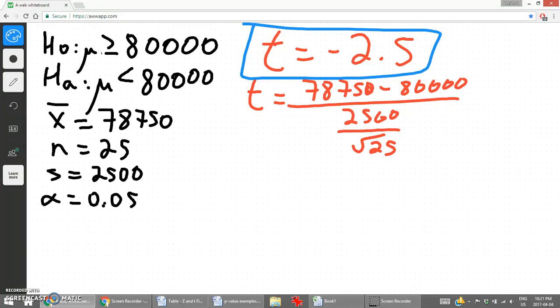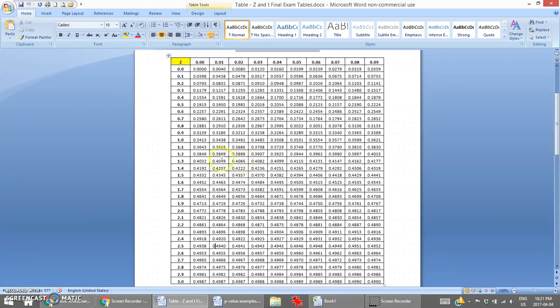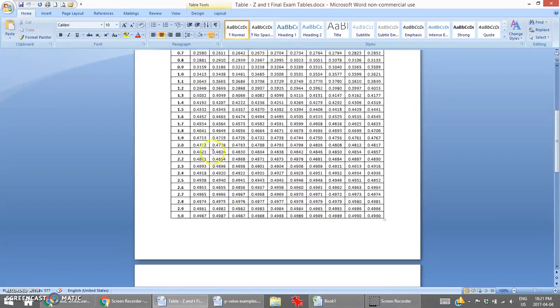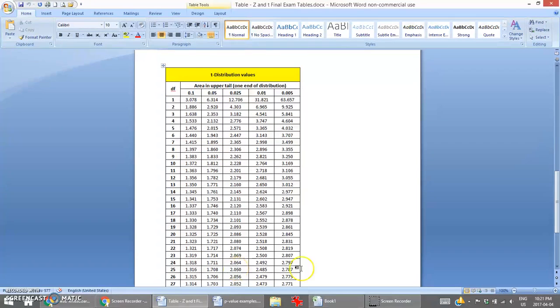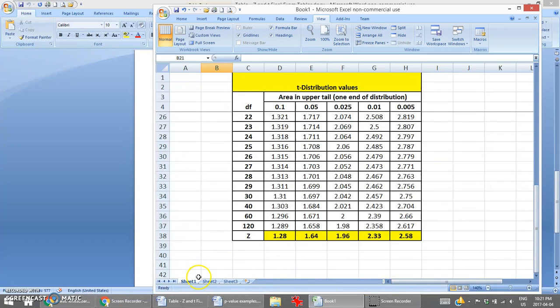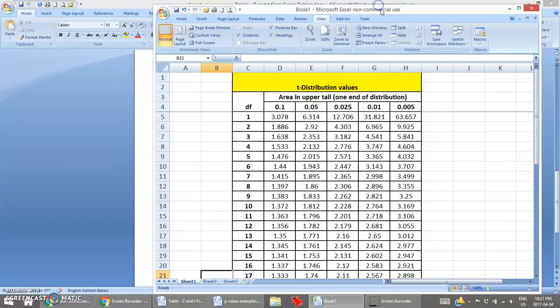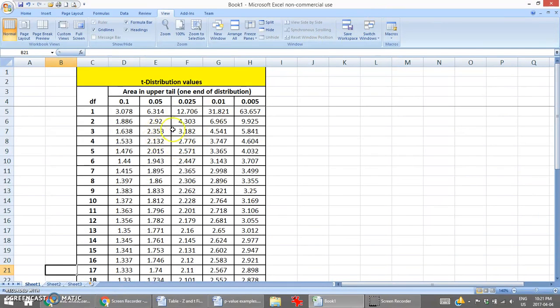Now what we do with that test statistic, it's a t value negative 2.5, we need to find the area and then make an adjustment to get that p-value. So instead of going to the normal distribution chart which is for z values, we'd go to the t distribution values chart which looks like this.